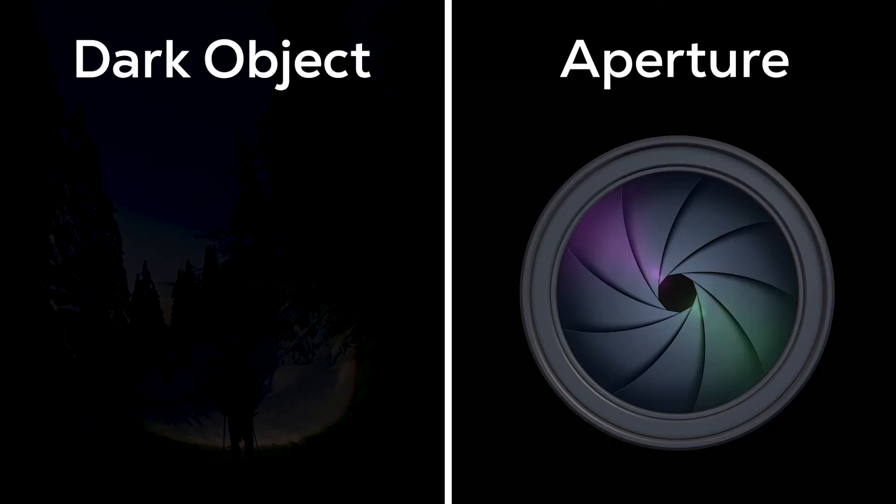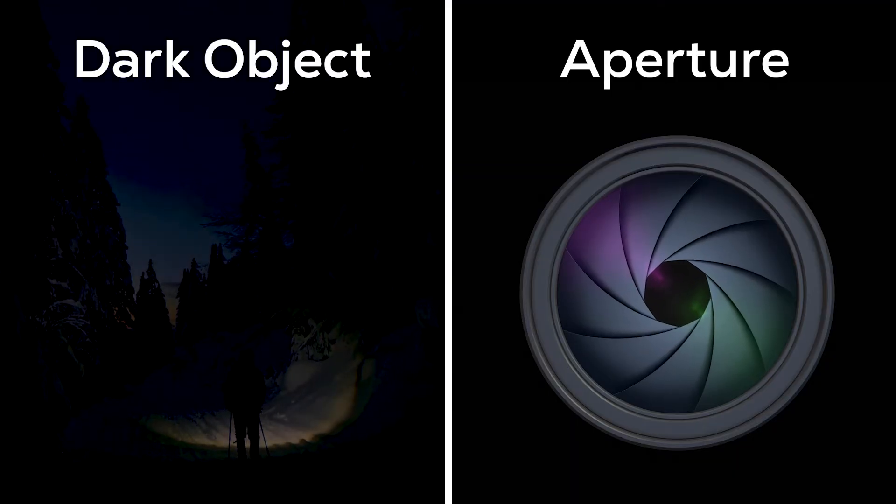When you want to take a photo of something dimmer, you widen the aperture to let in as much light as possible.